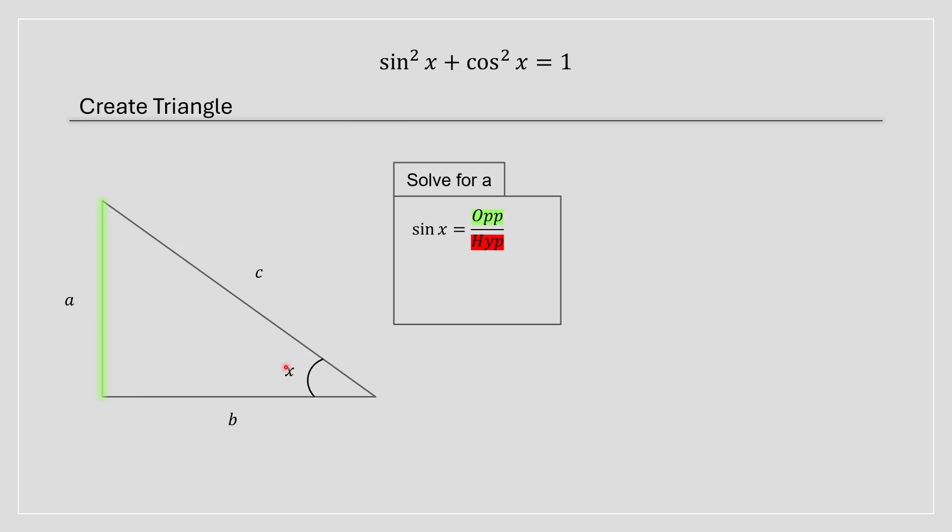So the opposite side with respect to x would be this a side over here, and the hypotenuse is always the longest side. So we're going to replace a and c into this equation and solve for a. So you're going to have a equals c times sin x.